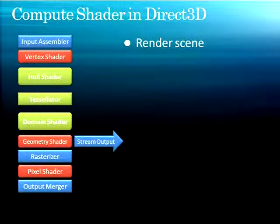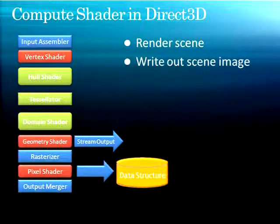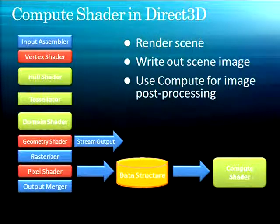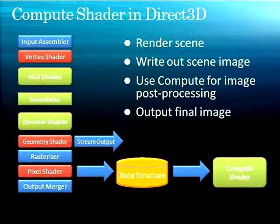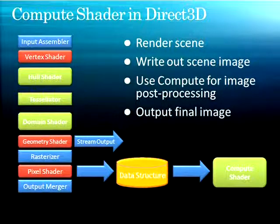Getting back to our pipeline diagram — what we're doing here is we render a scene, then write out that scene image to some data structure, then put that in the compute shader for image post-processing, and then output the final image. This is an example scenario. Note that the compute shader is not a stage that runs sequentially within the pipeline — it's its own thing.